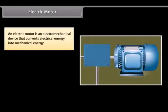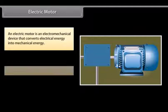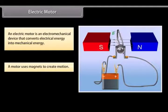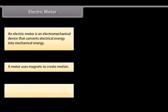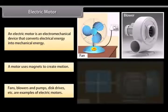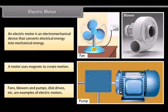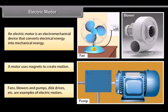Electric Motor. An electric motor is an electromagnetical device. It converts electrical energy into mechanical energy. Let us look at how electric motors work. A motor uses magnets to create motion. Inside an electric motor, the attracting and repelling forces of a magnet create rotational motion. Fans, blowers, and pumps, disc drivers, etc. are some examples of electric motors.